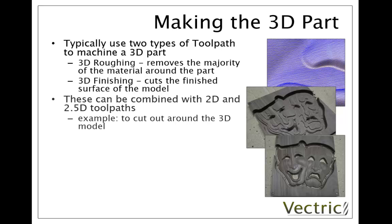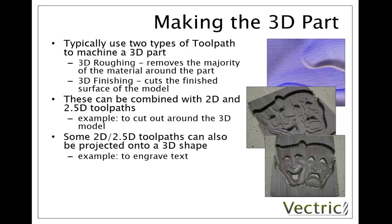As well as doing purely 3D toolpaths you might combine those with 2D and 2.5D toolpaths — for instance in this case we've done a 2D profile toolpath to cut the part out when finished. Some toolpaths can also be projected onto a 3D shape. For example you may want to engrave text onto a banner, in which case you do your 3D toolpaths first, then do something like a V carving on the text with a checkbox in the toolpath that says to project it onto the 3D model, which will then follow the contours of the 3D model with the parameters of the toolpath you've set up.